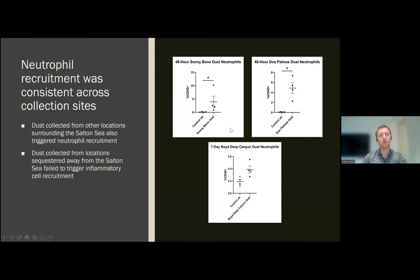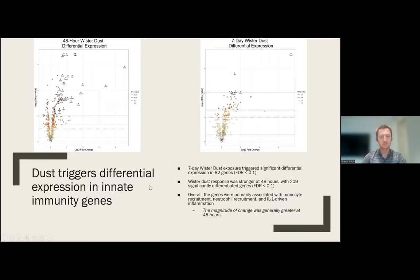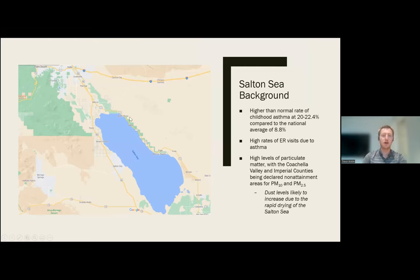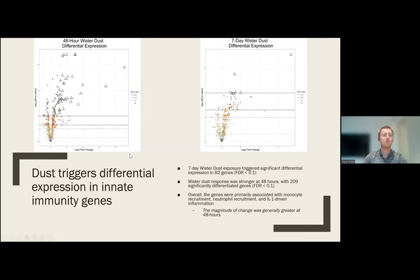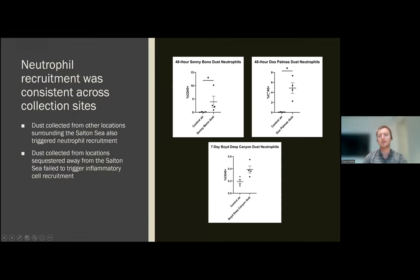So we had several other locations that we tested. We had Sunny Bono, which is located down here, Dos Palmas, which is located up to the northeast of the Salton Sea, and then Boydee Canyon, which is sequestered away and doesn't get the same dust that is involved with the Salton Sea. So what we found was that the locations nearby the Salton Sea at these different sites also had an increase in neutrophils at 48 hours, just like what we saw with the Worcester dust, while the Boydee Canyon one did not get any sort of significant increase in cell recruitment. So it seems to be only that the dust collected from nearby the Salton Sea is leading to this poor health outcome.